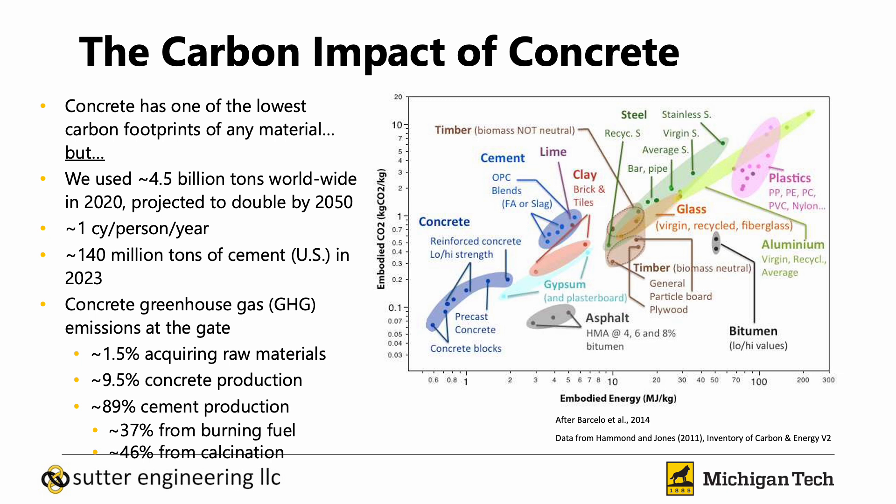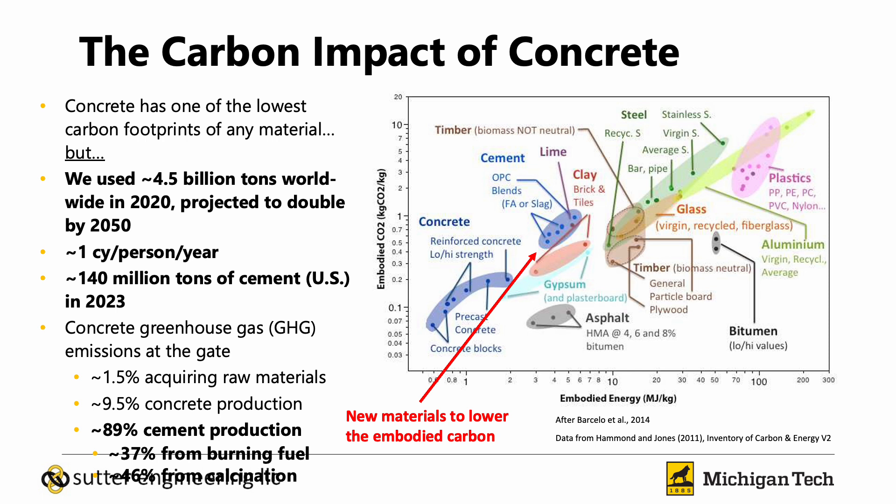We're doing this to lower the carbon impact of concrete. Concrete has one of the lowest carbon footprints of any material on an individual basis, but the issue is that we use so much concrete in the world annually — in 2020, 4.5 billion tons was estimated — that the multiplier is huge. So we're looking at new materials to lower the carbon of cement itself, but we also need to use less cement in our concrete by using more supplementary cementitious materials.